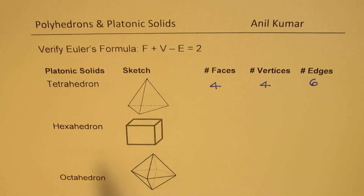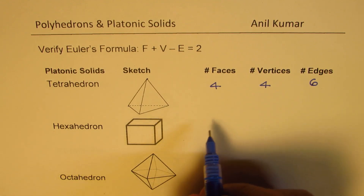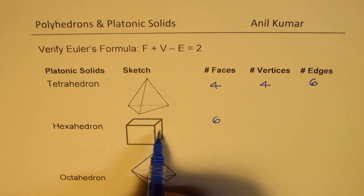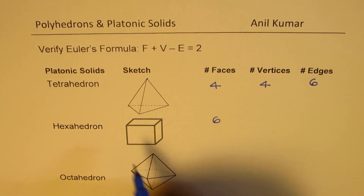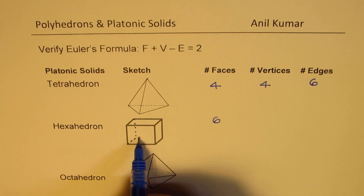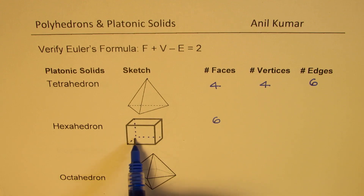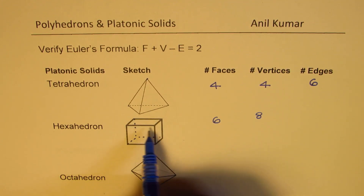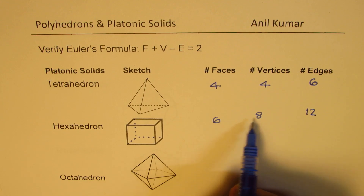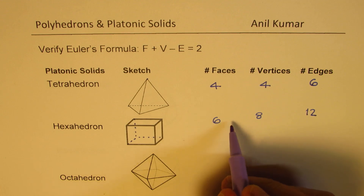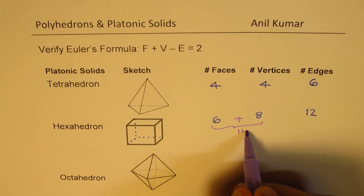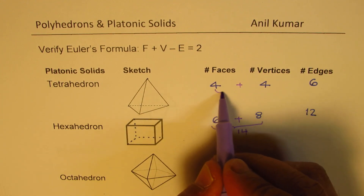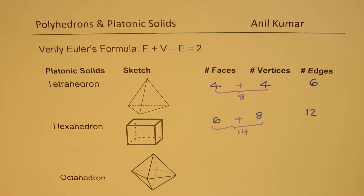Now let's look at the hexahedron. Hexah means 6, so it has 6 faces: front, back, left side and right side, top and bottom. These are all 3D figures. As you can see, there are 4 vertices on the top and 4 on the bottom, making a total of 8 vertices. The edges are 4 on top, 4 on the bottom, and 4 joining them — so we have 12 edges. Adding faces and vertices gives 14, which is 2 more than 12. So it works.